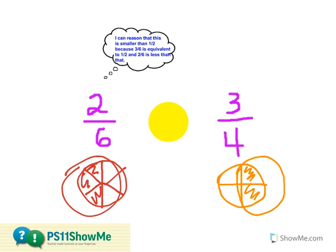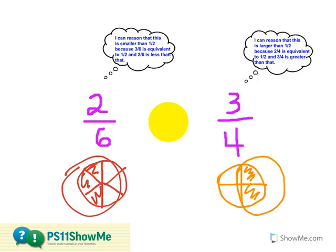And three-fourths seems to be greater than two-fourths. So I can reason that this is larger than half, because two-fourths is equivalent to one-half, and three-fourths is greater than that. So once again, I can compare and analyze and see that three-fourths is the greater fraction. Here are several strategies that you can use to compare unlike fractions.